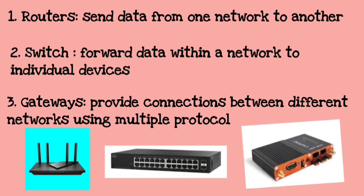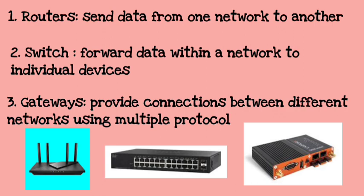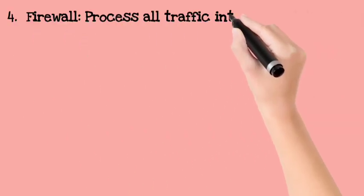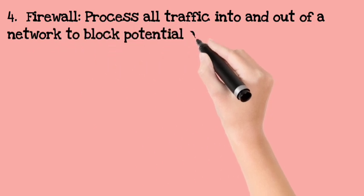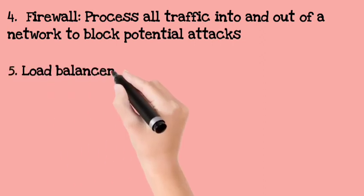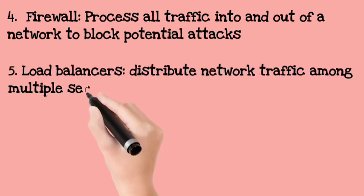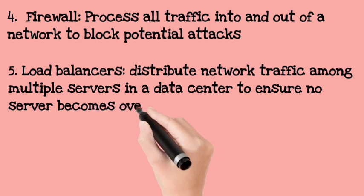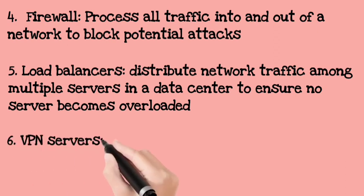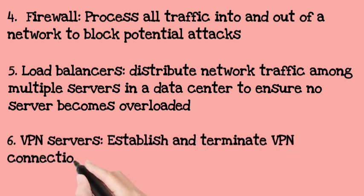Fourth is the firewall. The firewall intercepts potential attacks — you can check the description for more details. Fifth is load balancers, which distribute network traffic to different servers so that no data center or server is overloaded.